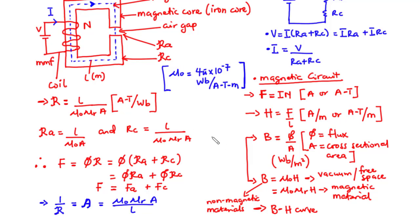In the case where you want to find the value of either B or H for a magnetic material, we can't use that formula. Hence it is advisable to use the BH curve to find either B or H when one of them is known.